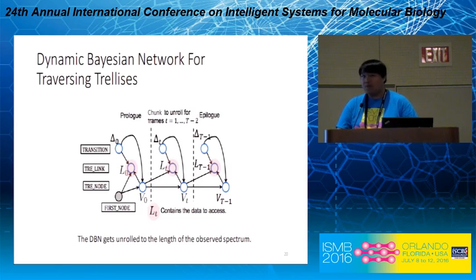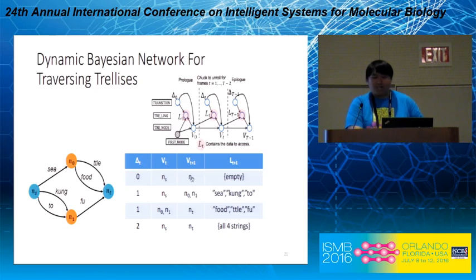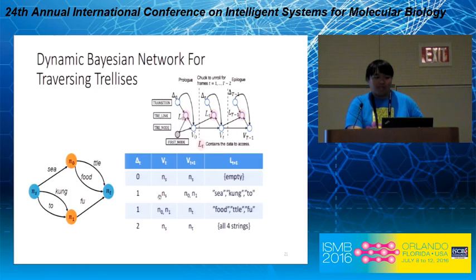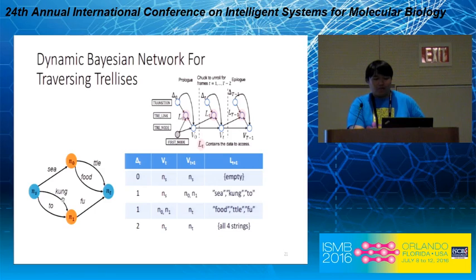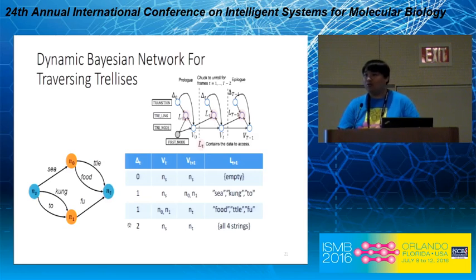To understand the mechanism of this DBN model, let's revisit our previous simple trellis example. Suppose at the current time step we start from the source node S. If we set delta to zero, it means we don't want to move any further into the trellis, so we stay at the source node at the next time step and traverse no data. If we set delta to one, we want to move one step further, so at the next time step we arrive at nodes N0 and N1 and have traversed the data. Similarly, starting from N0 and N1 and moving one step arrives at the target node, traversing the remaining data. If we start from the source node and move two steps, we arrive at the target node and have traversed all four data sequences encoded in the trellis.